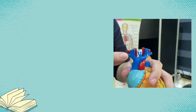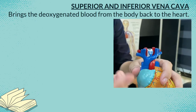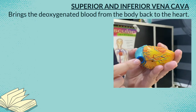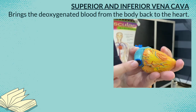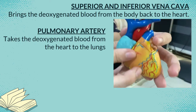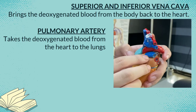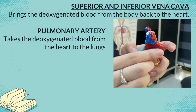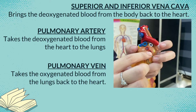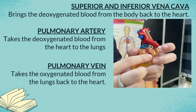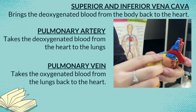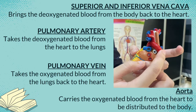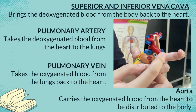The superior vena cava brings the deoxygenated blood from the upper part of the body, and the inferior vena cava brings the deoxygenated blood from the lower part of the body. Our pulmonary artery takes the deoxygenated blood from the heart to the lungs, and our pulmonary vein takes the oxygenated blood from the lungs back to the heart. The aorta carries the oxygenated blood from the heart to be distributed to the rest of the body.